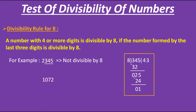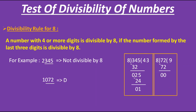Now let's check the second number, which is 1072. The last 3 digits form 072, that is 72. Let's check by dividing by 8: 8 × 9 = 72, so we get no remainder. Therefore, the number 1072 is divisible by 8.